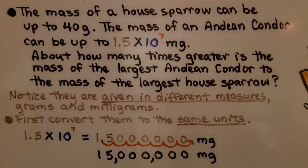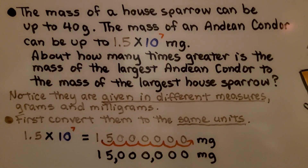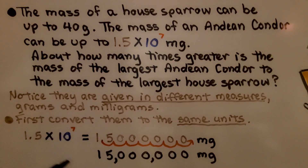The mass of a house sparrow can be up to forty grams. The mass of an Andean condor can be up to one and five tenths times ten raised to the seventh power milligrams. About how many times greater is the mass of the largest Andean condor than the largest house sparrow? Notice they're given in different units — grams and milligrams — so first we need to convert them to the same units. One and five tenths times ten to the seventh power would be fifteen million milligrams.